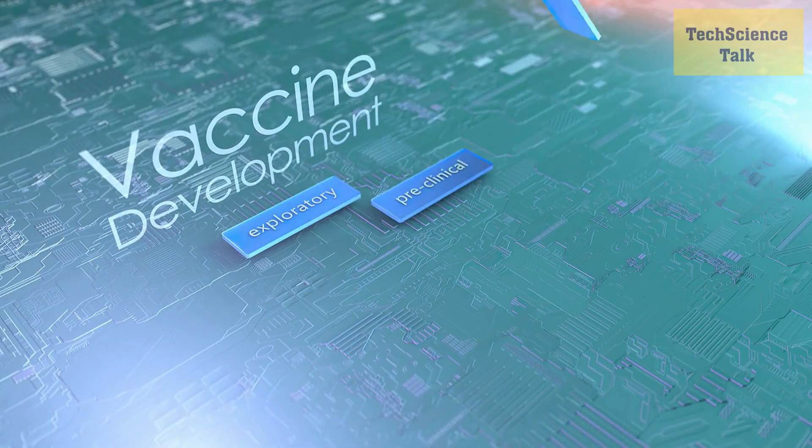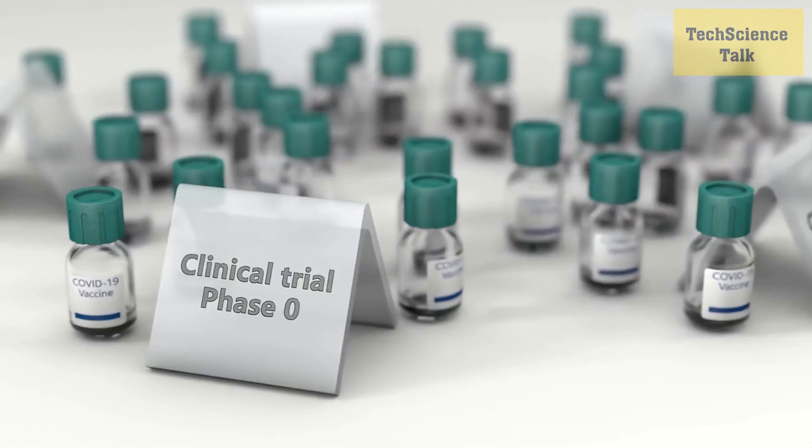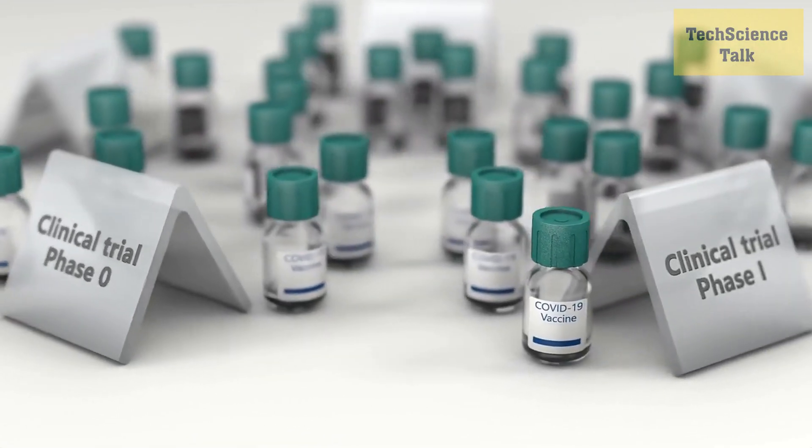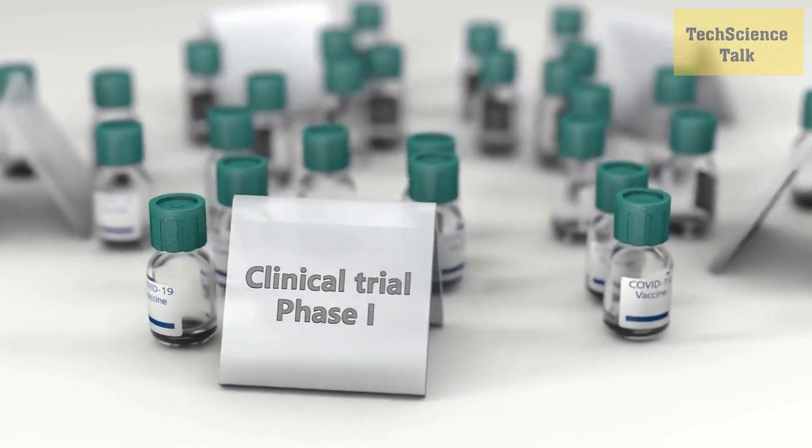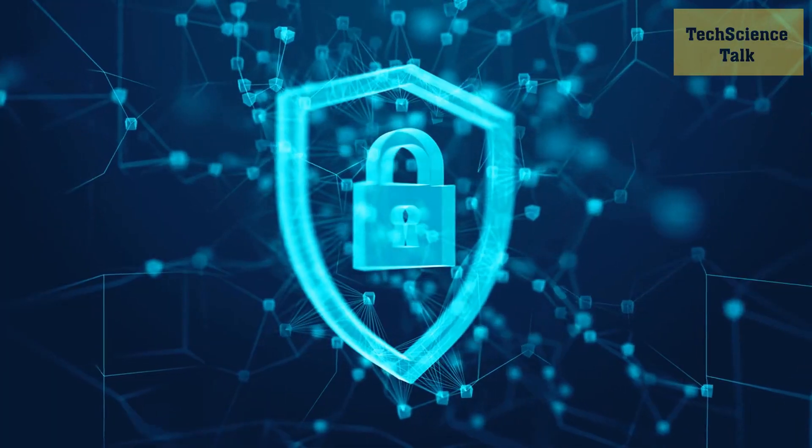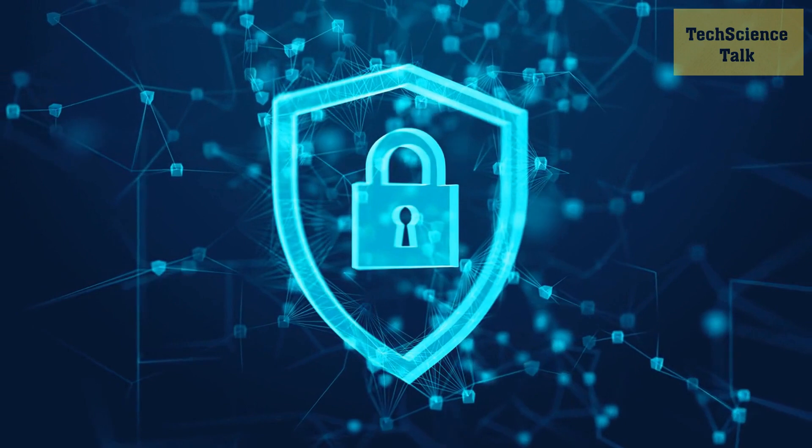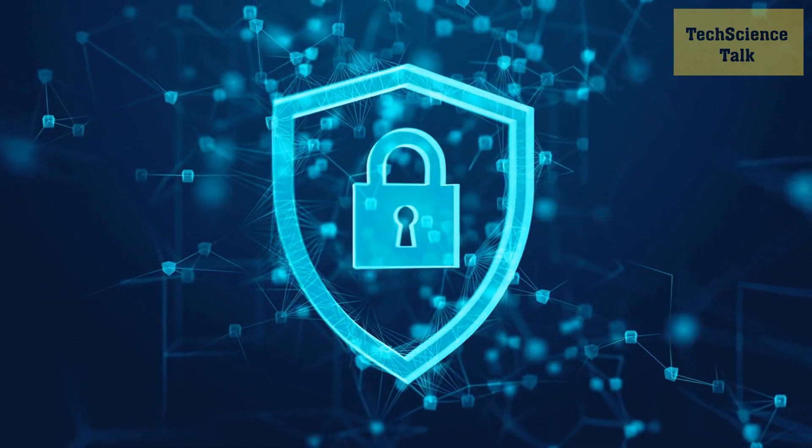Telomere shortening is another factor that contributes to aging. Telomeres are protective caps on the ends of chromosomes, and they shorten each time a cell divides. Eventually, the telomeres become too short to provide adequate protection, and the cells stop dividing or die.